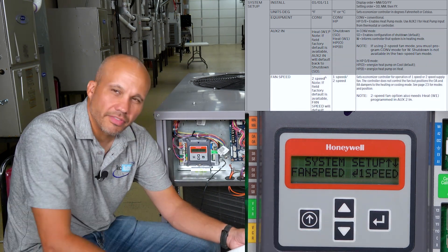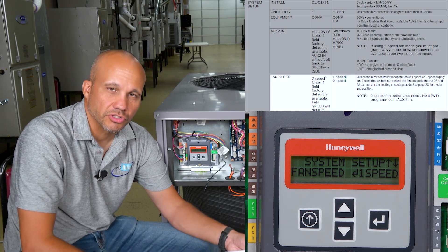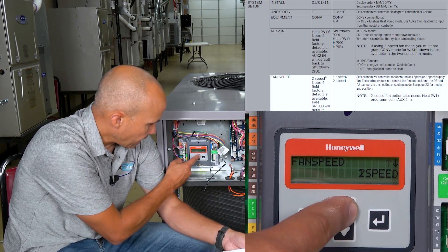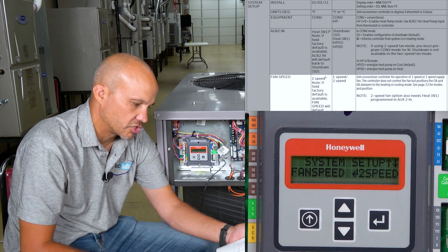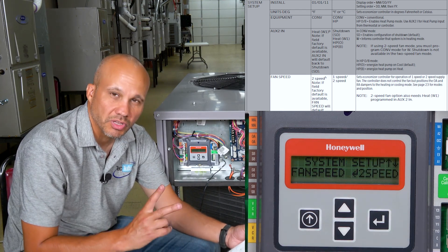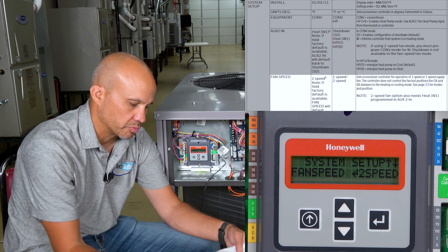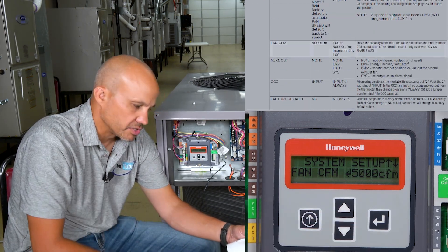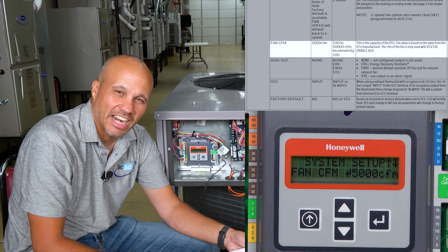Scrolling down to Fan Speed — one or two. I just said most units are two-speed fans, so I'll hit Enter, toggle that up to Two Speeds, hit Enter, and it says 'Change Stored.' Now it's set up for a two-speed fan, which means I'll have two minimum damper positions, which we'll talk about in a second.